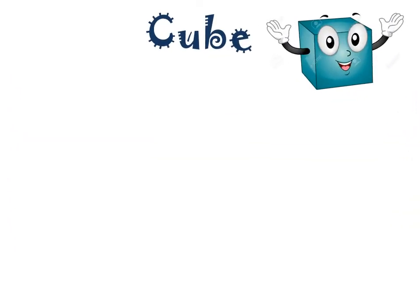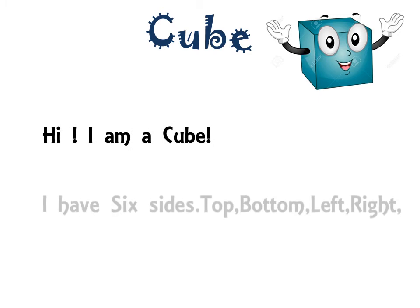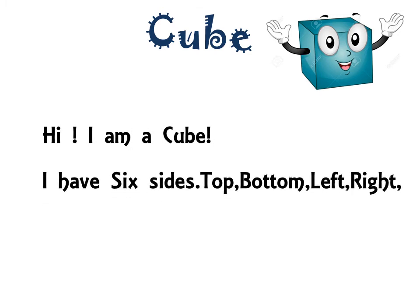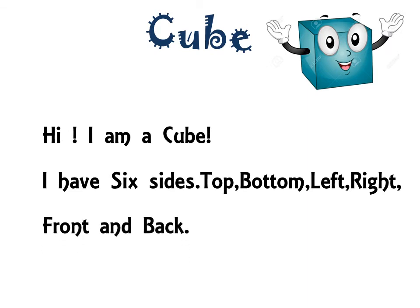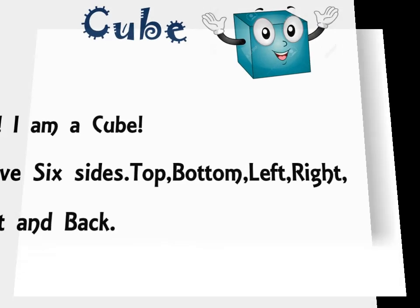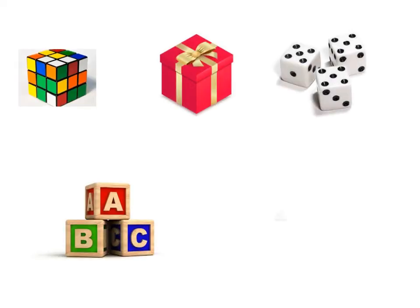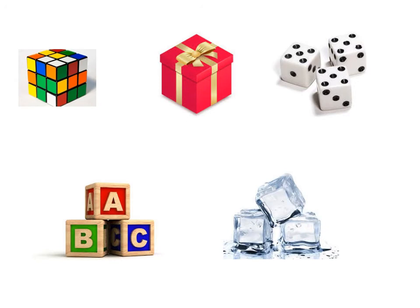Cube. Hi, I am a cube. I have six sides: top, bottom, left, right, front, and back. Let us see few objects that have a 3D shape of a cube. All these objects are in the shape of a cube.